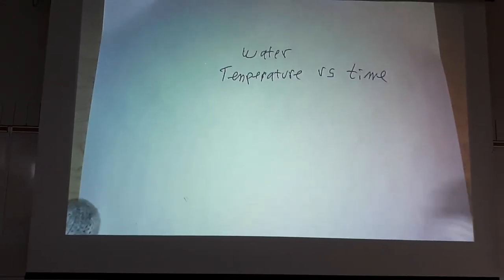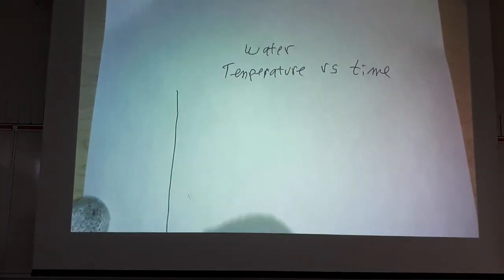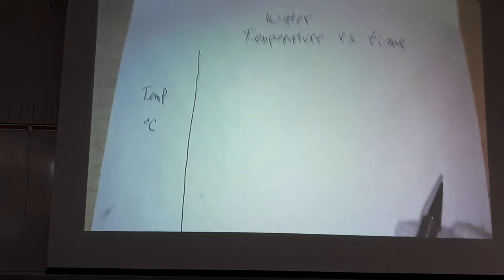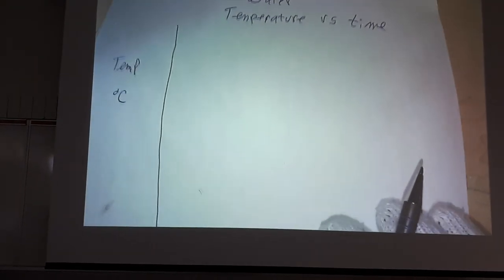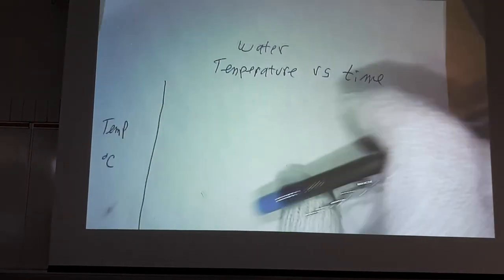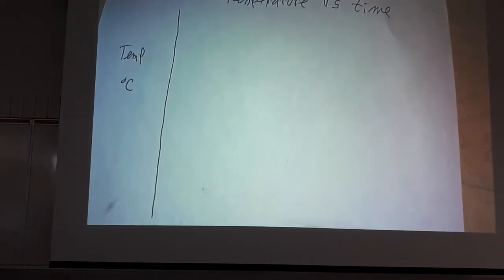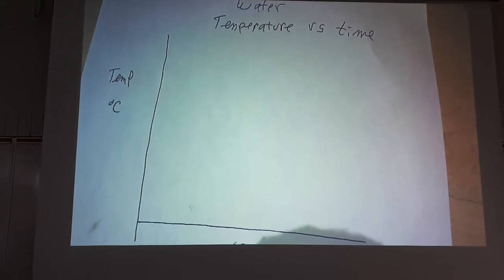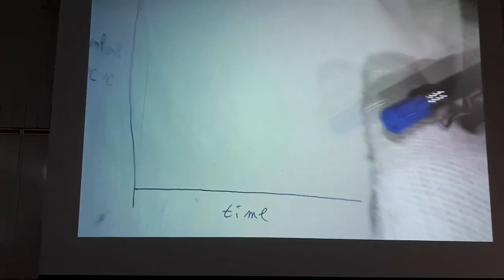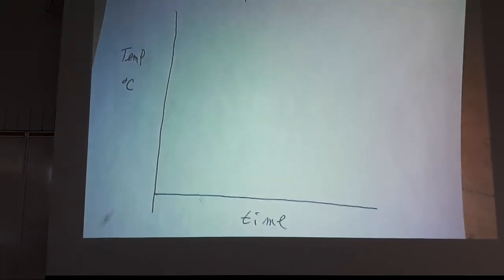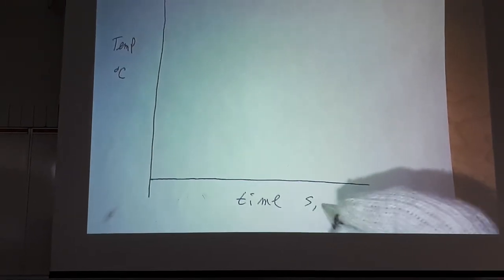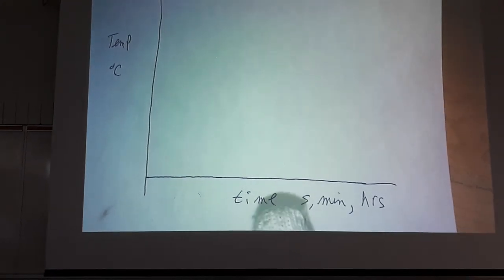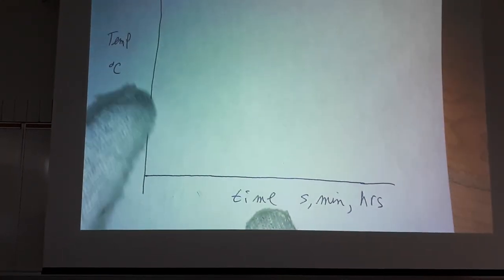I'm going to draw a little graph. Here's temperature in degrees Celsius. And at the bottom, I'm going to have time. I'm going to put another space there. Time is going to be at the bottom. We'll put it over here. We have temperature versus time. Time can be in seconds, or in minutes, or in hours. So we have temperature versus time.